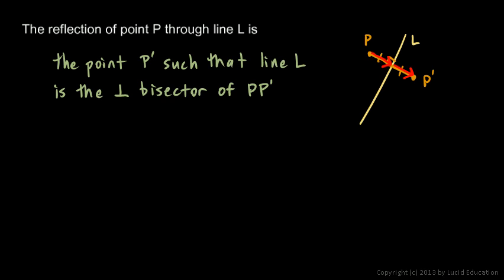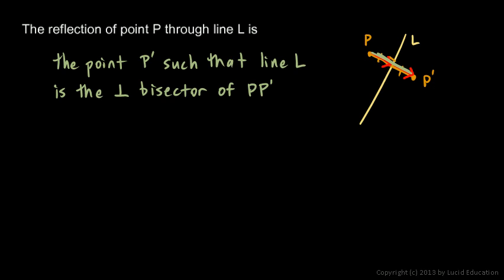Remember: if you have a point not on the line and reflect it across the line, then we get a little segment that is bisected by the line.